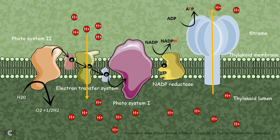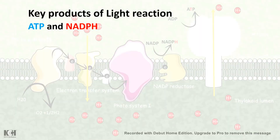The light reaction requires direct impingement of photons or light. In a different video we will talk about the light reaction in detail, but for now let's bypass it and understand the key products obtained from it. The key products generated in the light reaction are ATP and NADPH, and these two products are used in the light independent reaction and are essential for the Calvin cycle.